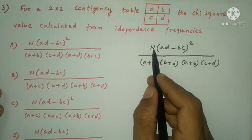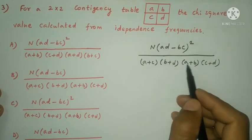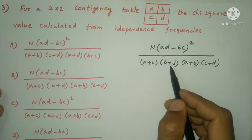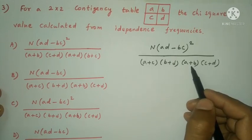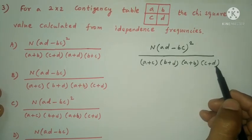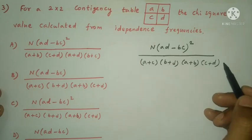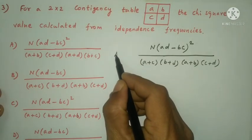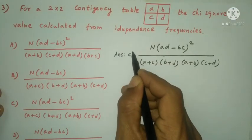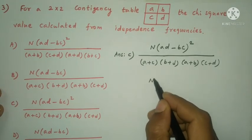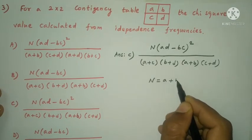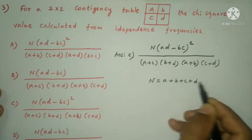The answer is n into AD minus BC the whole square divided by A plus C, B plus D, A plus B, and C plus D. Therefore the answer is option C, where capital N equal to A plus B plus C plus D.